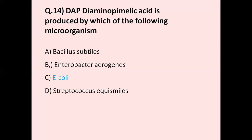Question number 14: DAP, diaminopimelic acid, is produced by which of the following microorganisms? Option A Bacillus subtilis, option B Enterobacter aerogenes, option C E. coli, option D Streptococcus. The correct answer is E. coli. E. coli is a gram-negative bacteria that produces DAP. Bacillus subtilis is gram-positive, and Enterobacter aerogenes is also gram-negative, but especially DAP is produced by E. coli. The correct answer is E. coli.